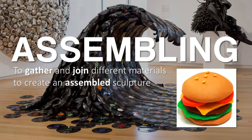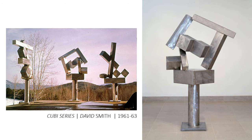There's assembling. This is when sculptors join together different materials to create an assembled sculpture. An example of this would be David Smith's Cubi series, in which he assembled stainless steel geometric shapes to create new forms.